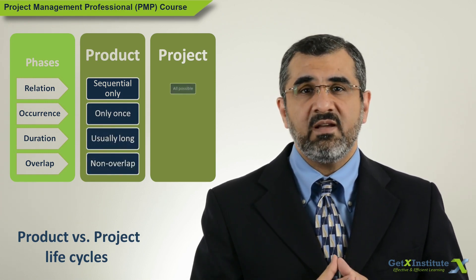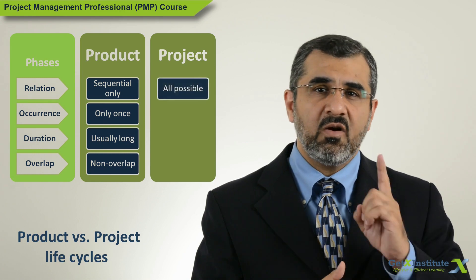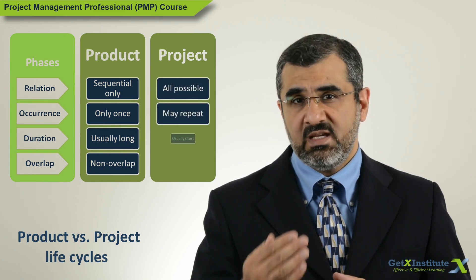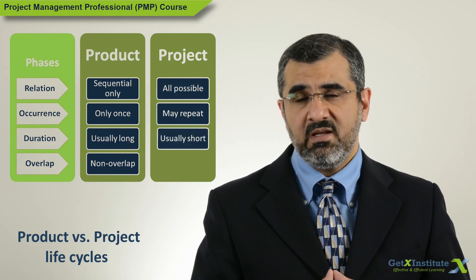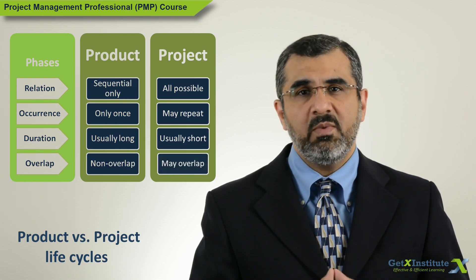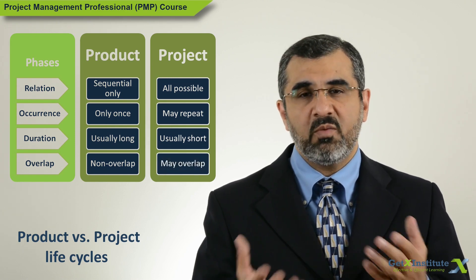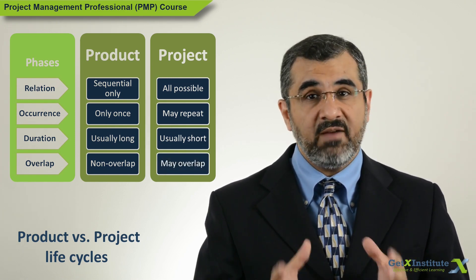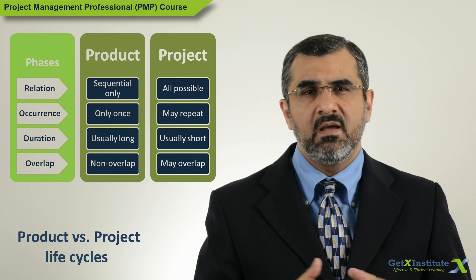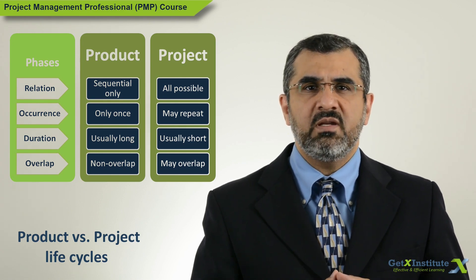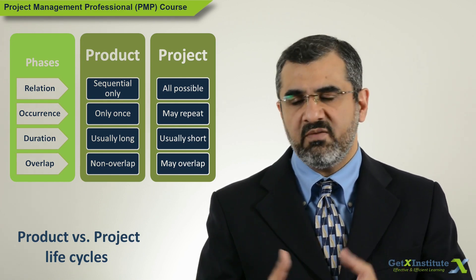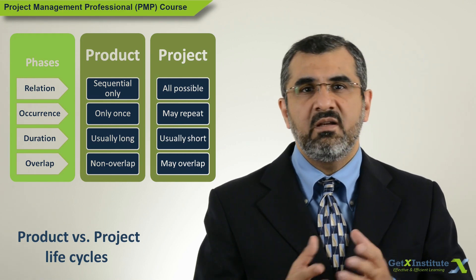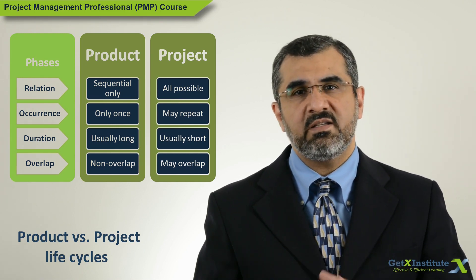Product life cycle phases occur only once. If a phase seems to be repeating, then it is probably a new or modified product. Project life cycle phases, on the other hand, can be repeated — like some design, some development and testing, then more design, development and testing.